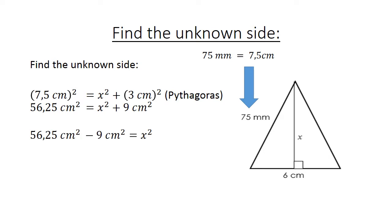Now we are going to subtract. 56.25 cm squared minus 9 cm squared equals x squared. 47.25 cm squared equals x squared. Both sides. We are going to take the square root. And x is now 6.9 cm.